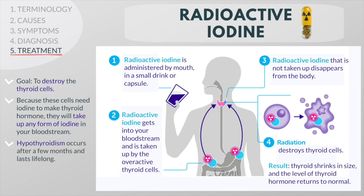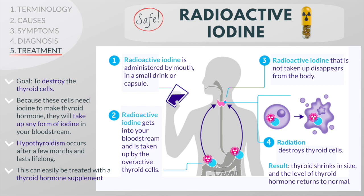More often, hypothyroidism occurs after a few months and lasts lifelong, requiring treatment. In fact, when patients have Graves' disease, a dose of radioactive iodine is chosen with the goal of making the patient hypothyroid so that the hyperthyroidism does not return in the future. Hypothyroidism can easily be treated with a supplement taken once a day. Radioactive iodine has been used to treat hyperthyroidism for over 60 years and has been shown to be generally safe. There has been no clear increase in cancer in hyperthyroid patients treated with radioactive iodine, and in the United States more than 70% of adults who develop hyperthyroidism are treated with it.